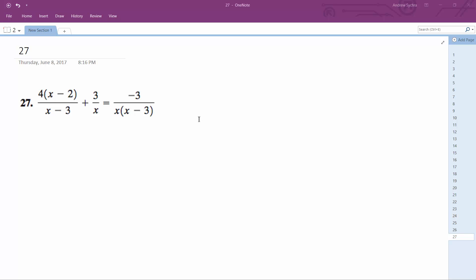For this problem, what we want to do is find the common denominator, then multiply by that, and then solve. So the common denominator here is x, x minus 3.